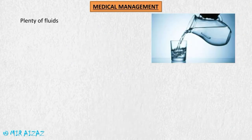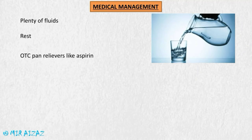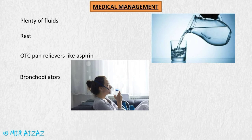Medical management includes advising the patient to drink plenty of fluids, because this makes the mucus thin and makes its passage through the bronchial tubes easier, so the patient can cough it up. The patient is also advised to rest, and over-the-counter pain relievers like aspirin or acetaminophen may be used to relieve symptoms. In severe cases, bronchodilators are used — they may be taken through a nebulizer or through inhalation of powder medication.